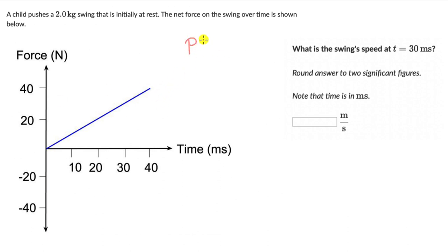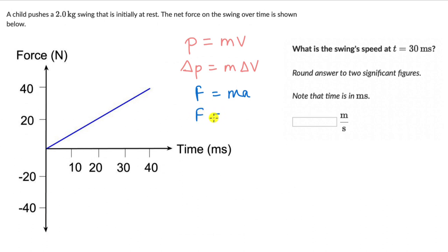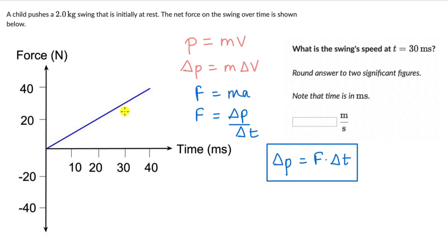We know one way of defining it was P equals MV, and we can write change in momentum as M delta V. There was also another way of defining Newton's second law. We were defining it as F equals MA, but now we know that force is really just a rate of change of momentum — delta P divided by delta T. If we take delta T to the other side, we get delta P equals F times delta T, which means for any force versus time graph, the area under the curve gives us the change in momentum.